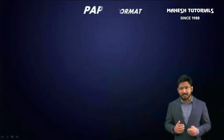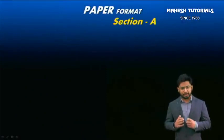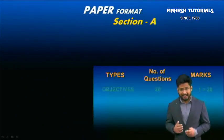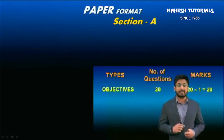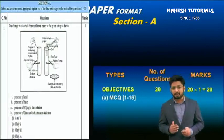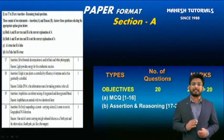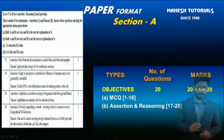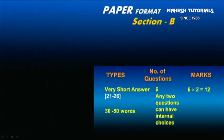Now let's discuss the paper format. Section A has 20 questions carrying one mark each — these are objective questions. Out of these, 16 questions are MCQs carrying one mark each, and questions 17 to 20 are assertion and reasoning based questions. This makes up a total of 20 marks, which is 25 percent of the 80 marks.